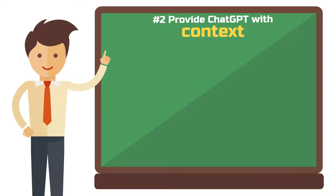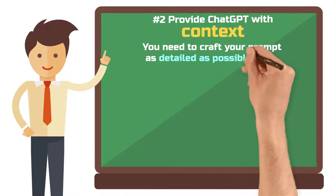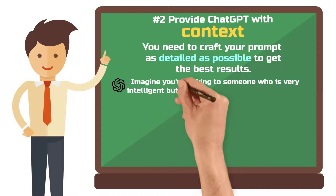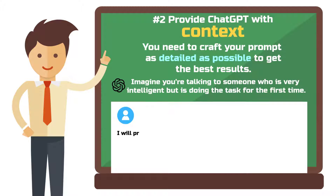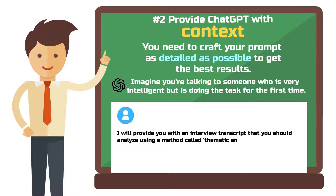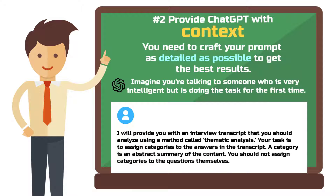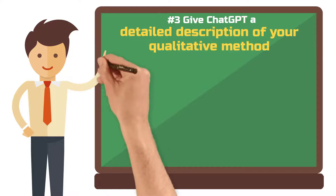Step 2: Provide ChatGPT with context. A two-line instruction won't get you very far — you need to formulate your prompt as detailed as possible. Just imagine you're talking to someone who's very intelligent but doing the task for the first time. For our thematic analysis example it could look like this: "I will provide you with an interview transcript that you should analyze using thematic analysis. Your task is to assign categories to the answers in the transcript. A category is an abstract summary of the content. You should not assign categories to the questions themselves."